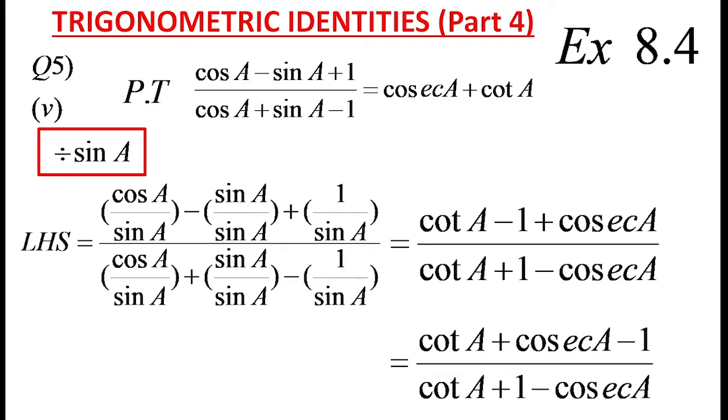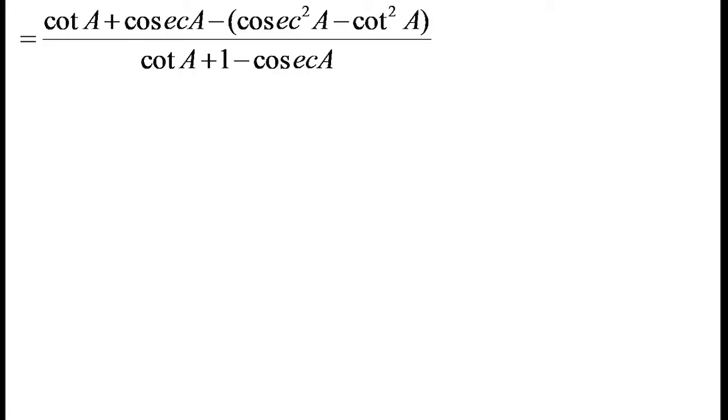Here in the numerator cot A plus cosec A minus 1, that 1 we are going to change in terms of cot and cosec. We know the identity, the third identity, cosec square A minus cot square A equal to 1. So instead of 1 I wrote cosec square A minus cot square A.